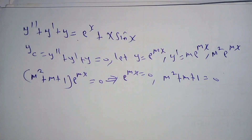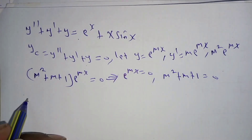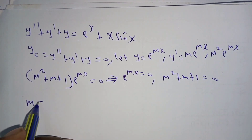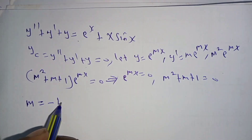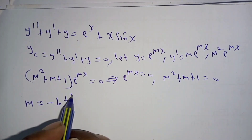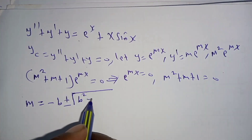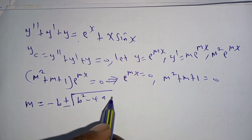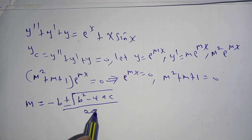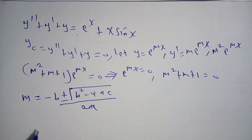Since e^(mx) can never equal 0, it follows that m² + m + 1 = 0. To solve this quadratic equation we use the quadratic formula: m = (−B ± √(B² − 4AC)) / 2A. We now substitute.